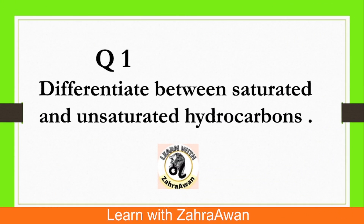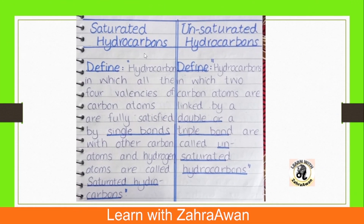Question number 1: Differences between saturated and unsaturated hydrocarbons. When carbon is in an organic compound with only single bonds, we call it a saturated hydrocarbon. If carbon in an organic compound has a double or triple bond, we call it an unsaturated hydrocarbon. Saturated hydrocarbon is fully satisfied with 4 single bonds between carbon atoms.